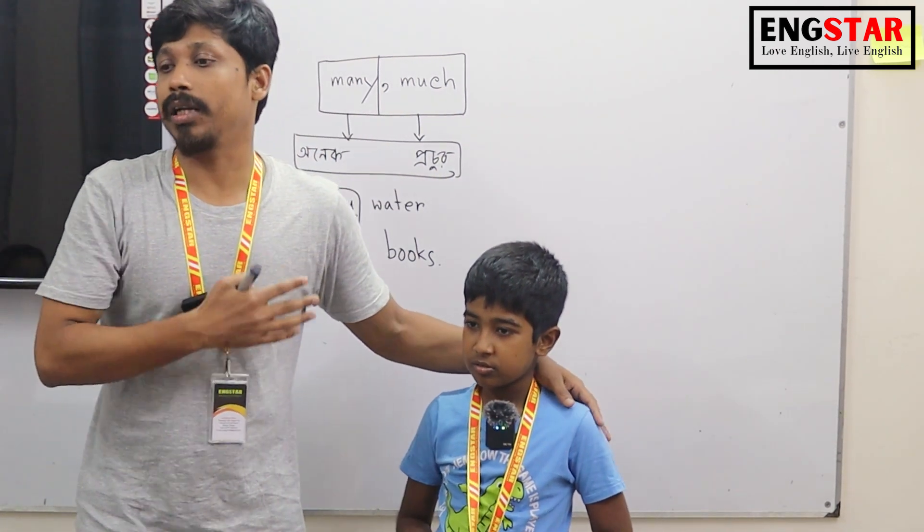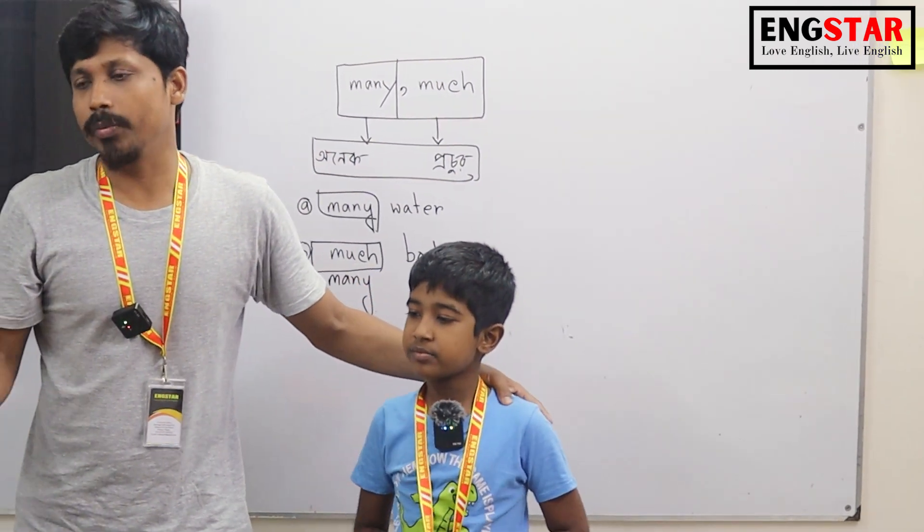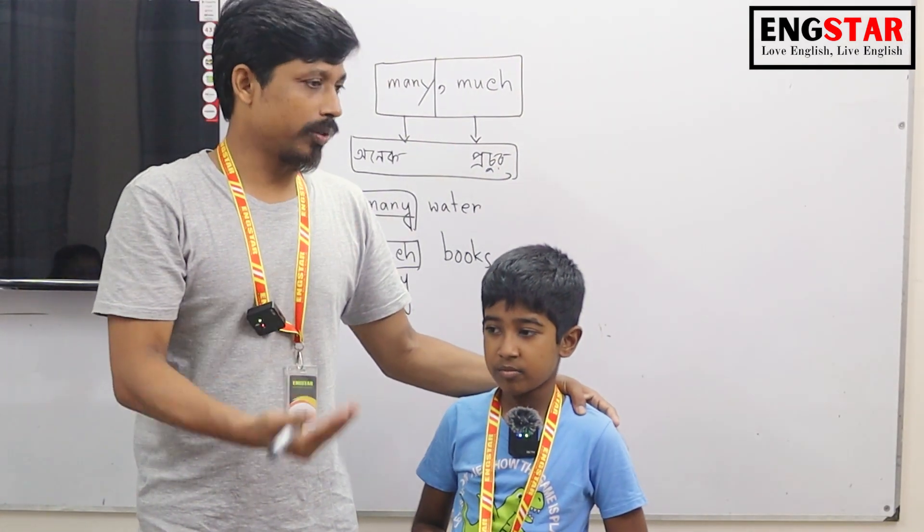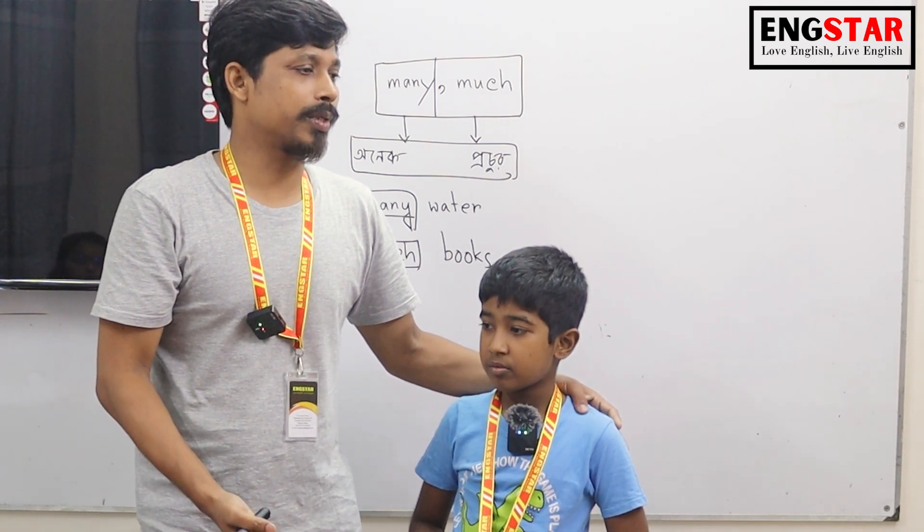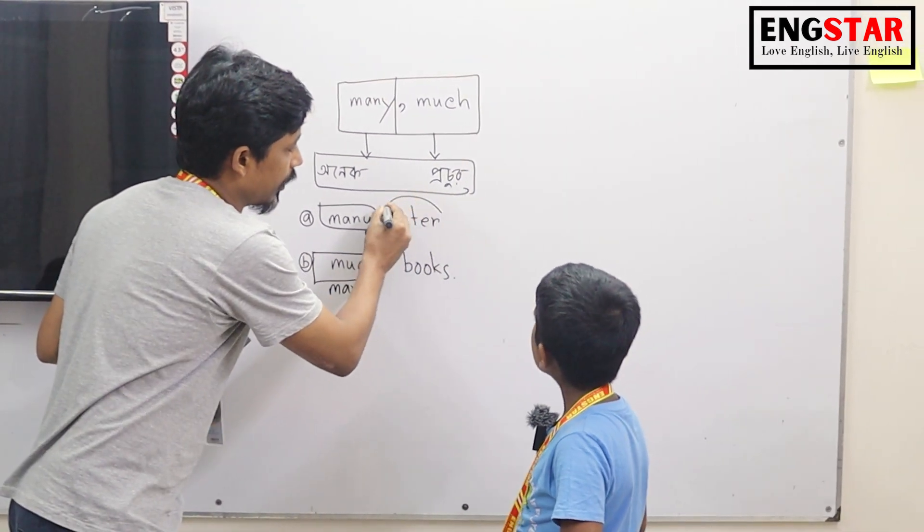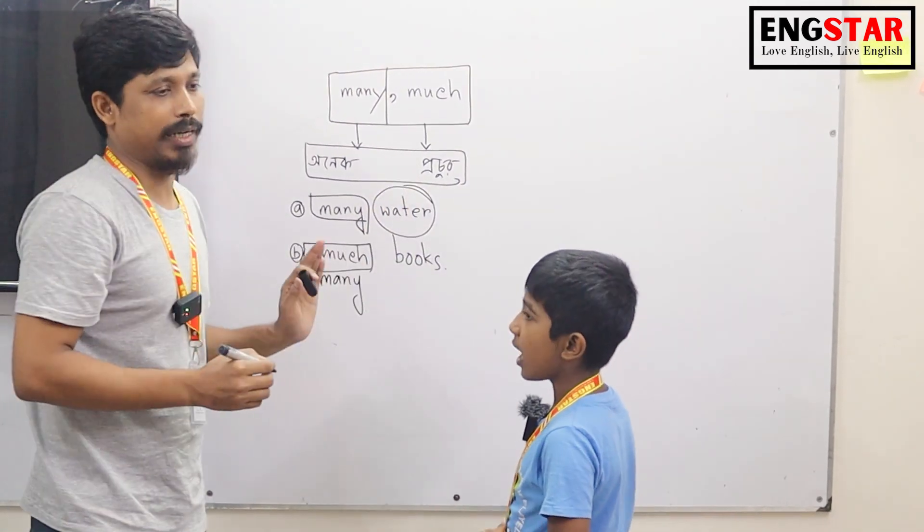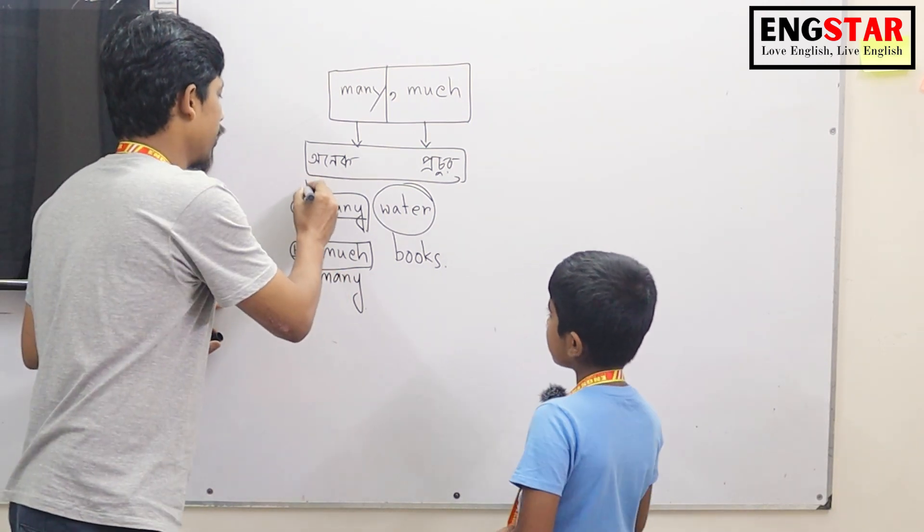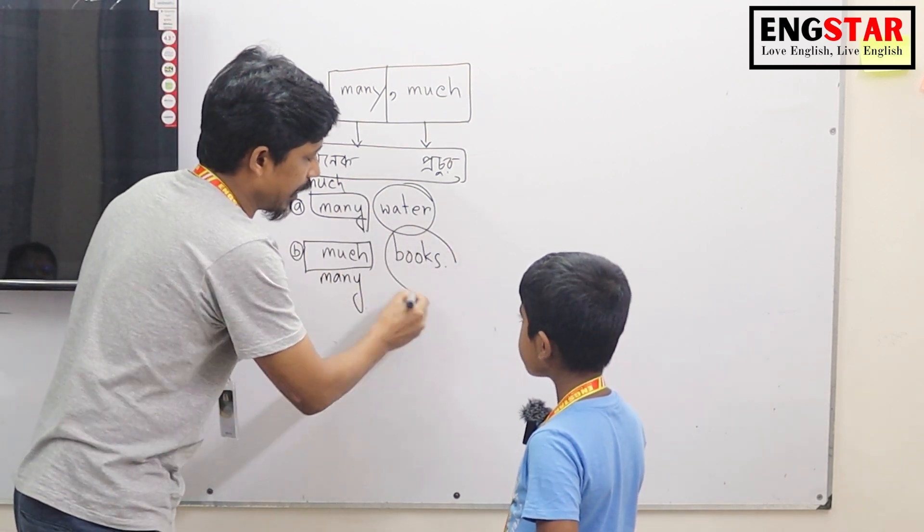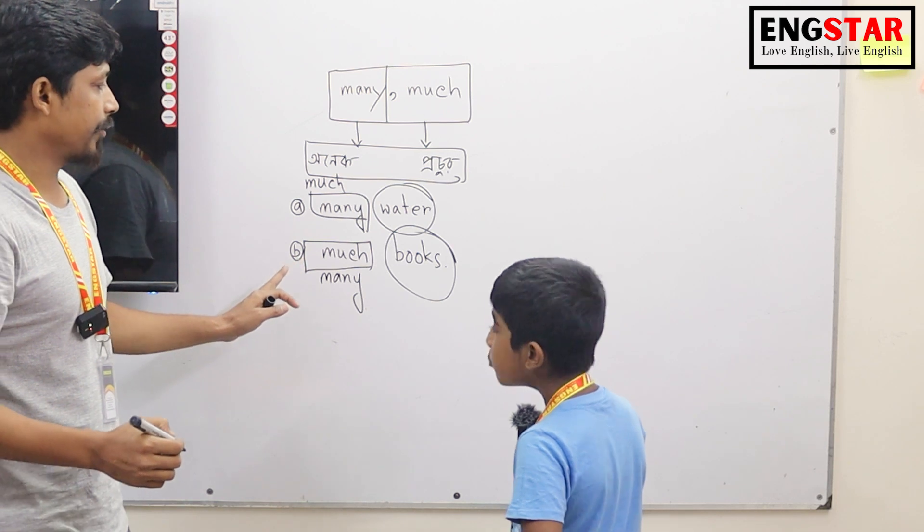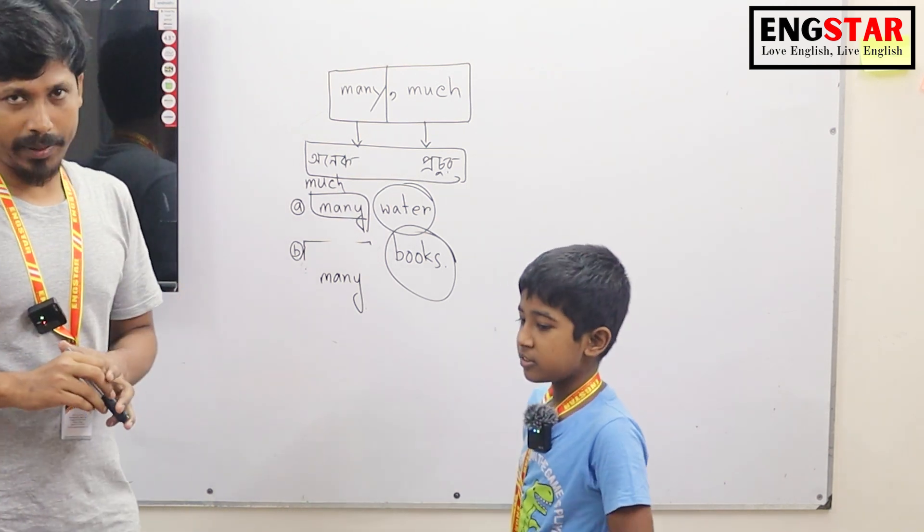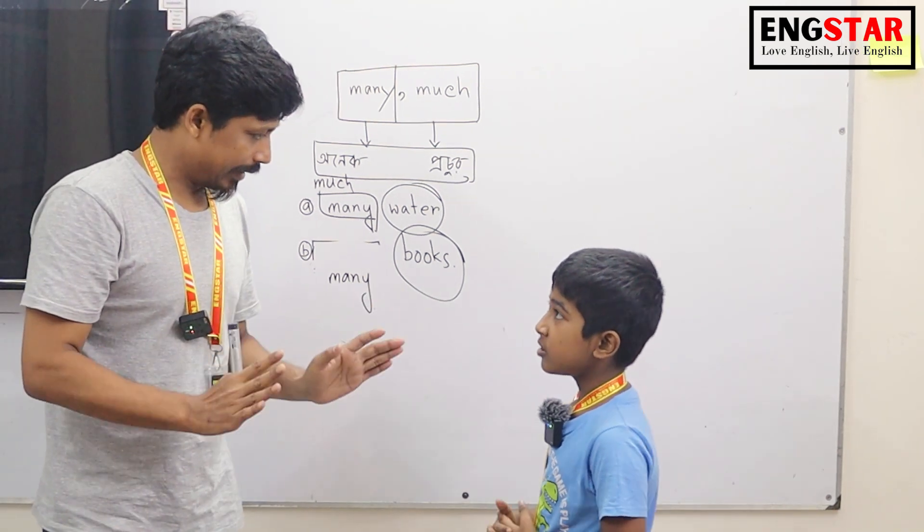Uncountable noun. Are you reading books? I am reading books. Are we reading books? I am reading books. What are you reading? Many books. What are you reading? Yes sir.